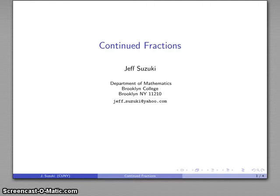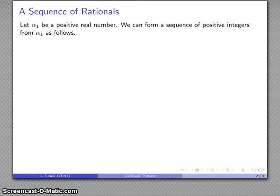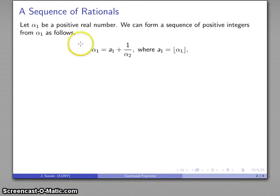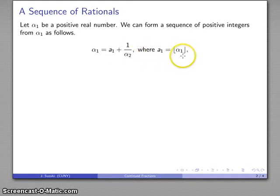One rather neat mathematical concept that has for whatever reason fallen by the wayside is that of the continued fraction, and this emerges as follows. Suppose I have some positive real number alpha 1. What I'm going to do is form a sequence of positive integers from alpha 1. First off, I'm going to set alpha 1 equal to a 1 plus 1 over alpha 2, where a 1 is the greatest integer less than alpha 1.